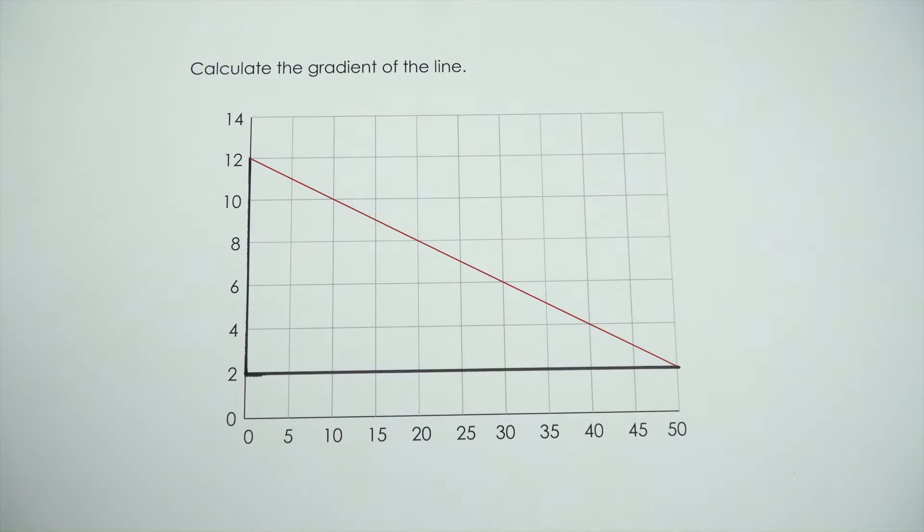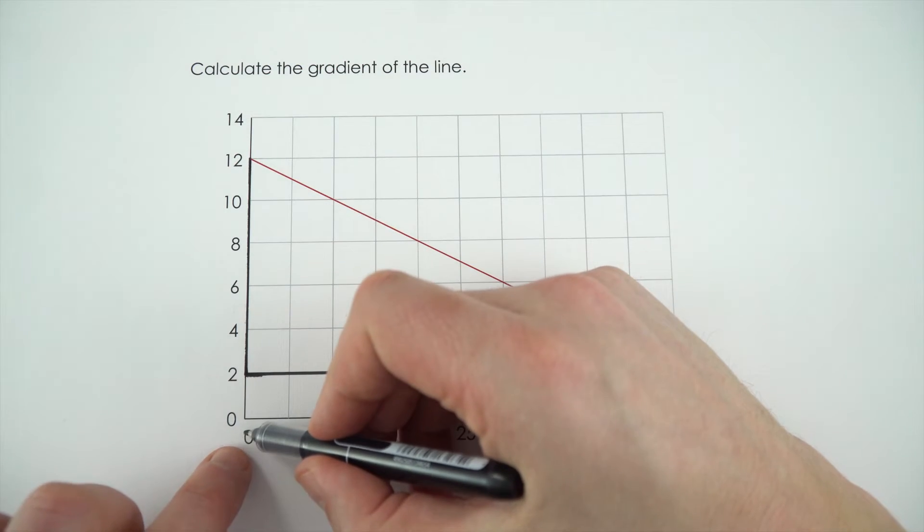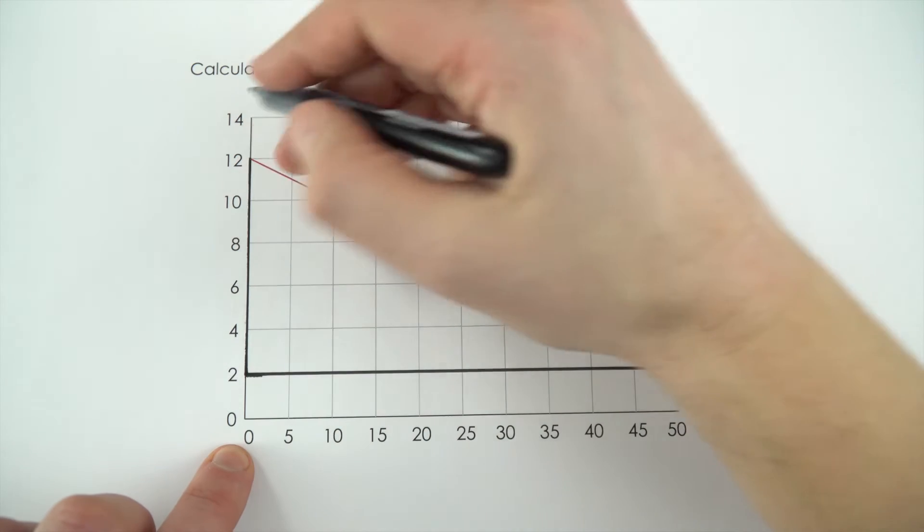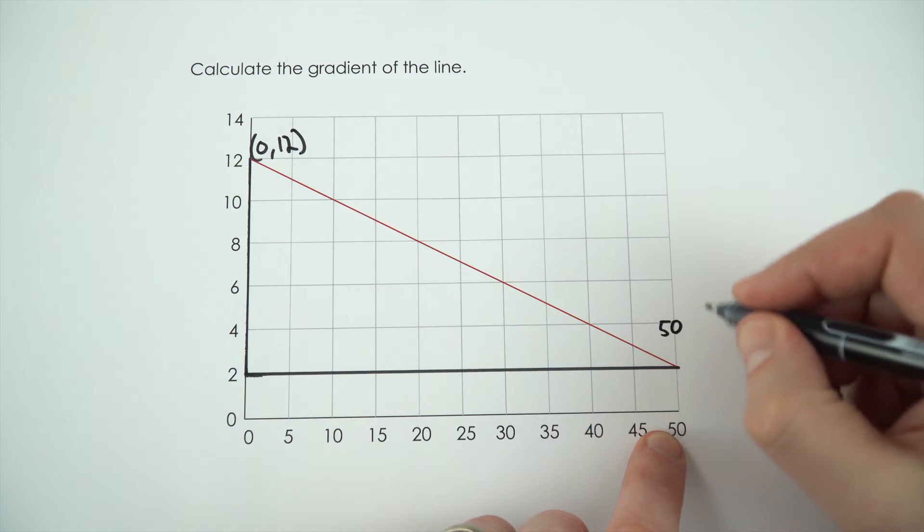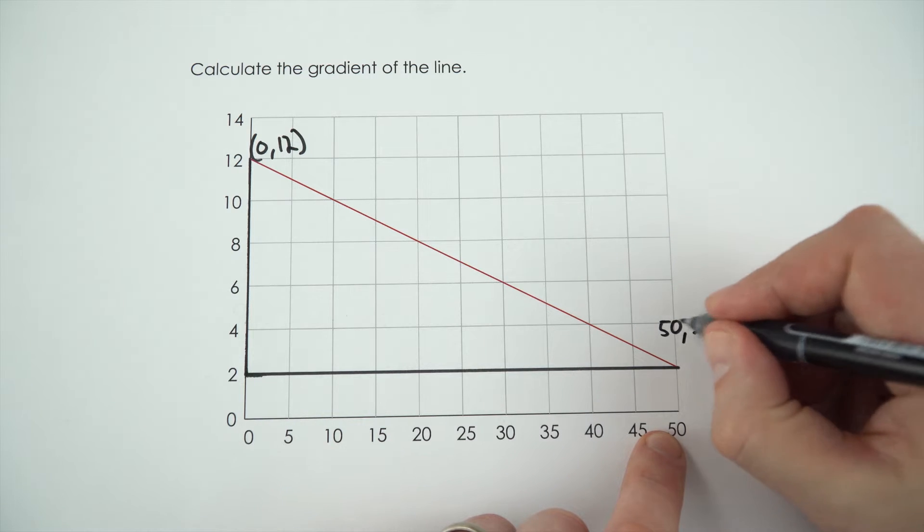What I can then do is I can read off the points. This one here, the x value is 0 when the y value is 12, and over here it ends when the x value is equal to 50 and the y value is equal to 2.